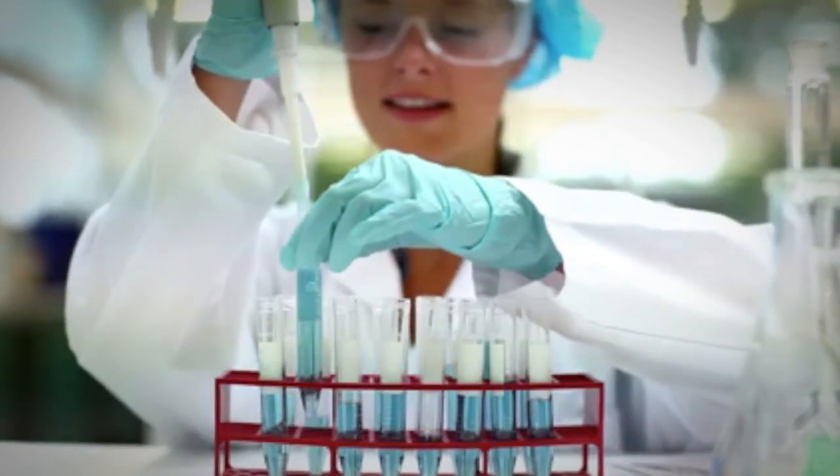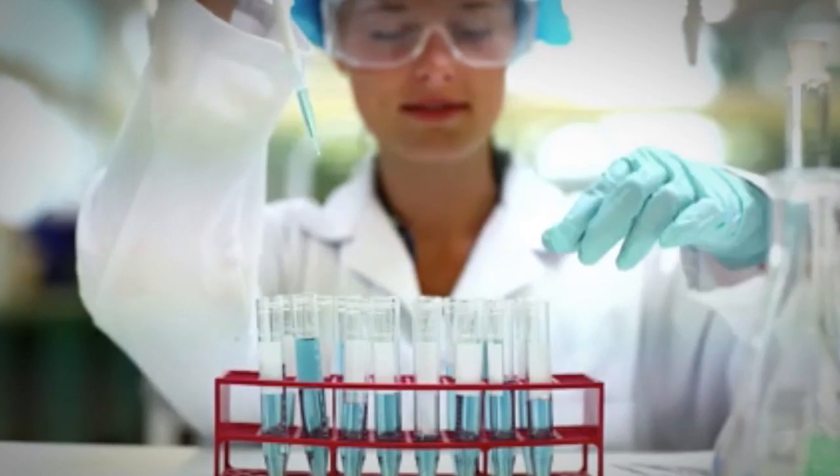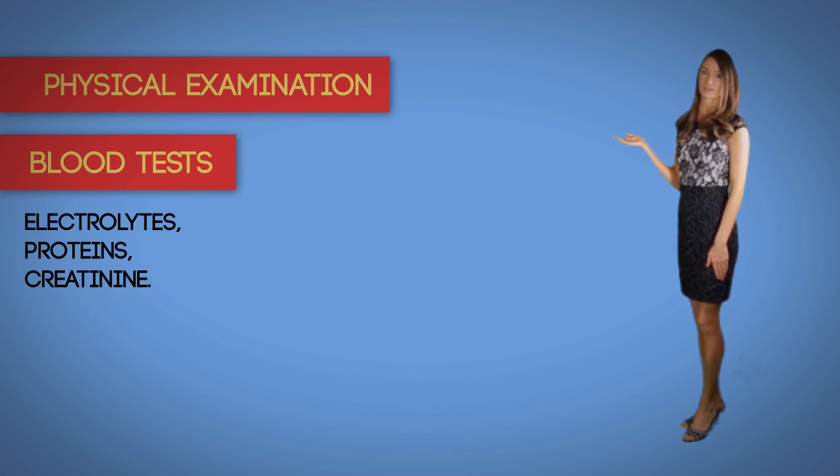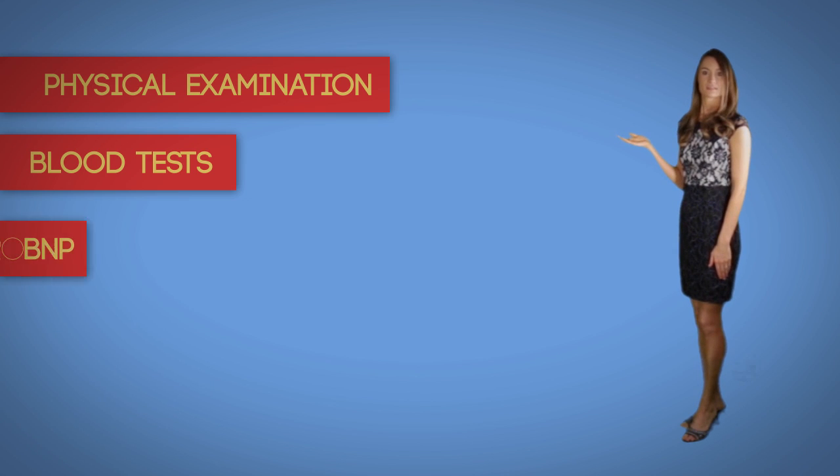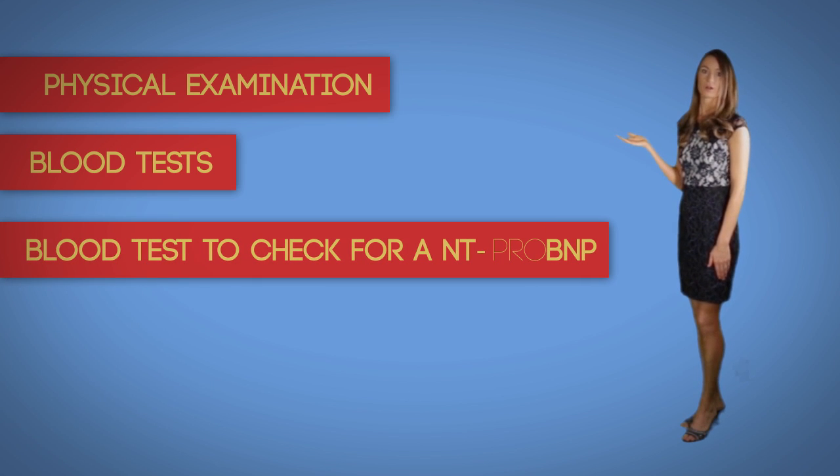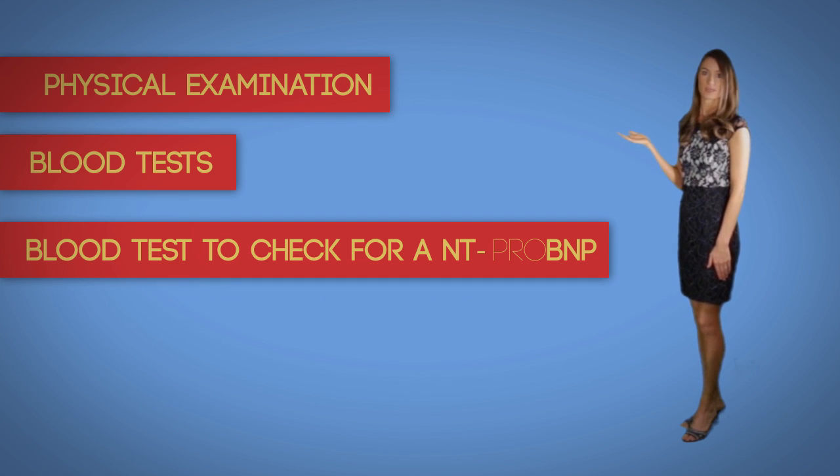Blood tests. Blood samples are drawn to analyze levels of important substances, such as electrolytes, proteins, and creatinine. Abnormal levels may indicate strain on organs, such as kidney and liver, which often results from heart failure. A blood test to check for a chemical called N-terminal ProB-type natriuretic peptide, also known as ProBNP, helps in diagnosing heart failure. It measures the amount of BNP hormone in the blood. BNP is made in the heart and shows how well the heart is working.